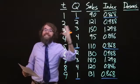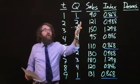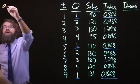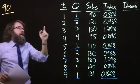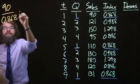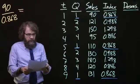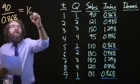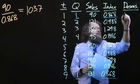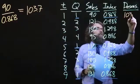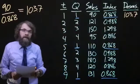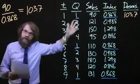To get our de-seasonalized numbers for the first data point, we're going to take the actual sales, 90, and divide by the seasonal index for the first quarter, 0.868. That is going to give us a number of 103.7. That is the number we will use in the next step when we go to calculate the trend.